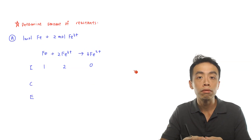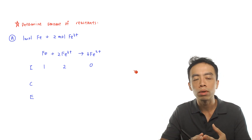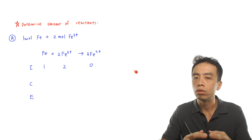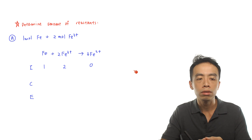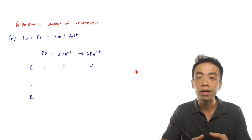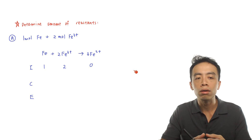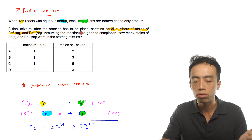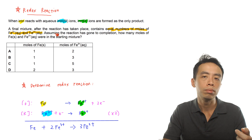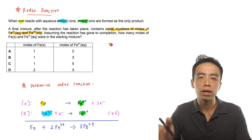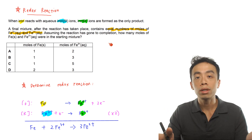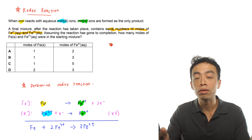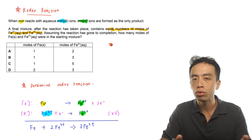Once the overall redox reaction is determined, we can use the mole ratio to systematically run through each option. I find using the ICE table a lot faster — it lets us determine the resultant solution very concisely. The question asks that after the reaction, the resultant solution has equal numbers of moles of iron 2+ and iron 3+. So we compare the moles of these two ions in each resultant solution and find the case where they are exactly the same.